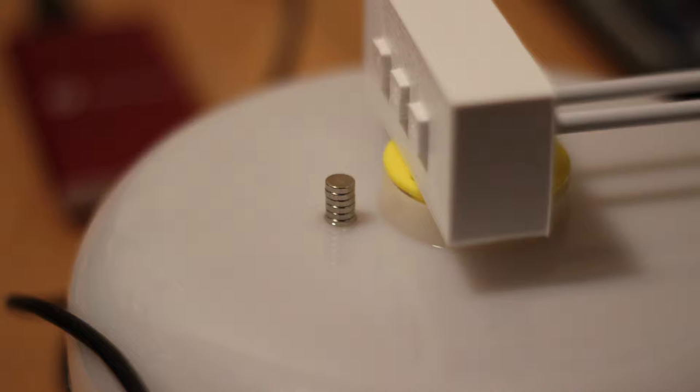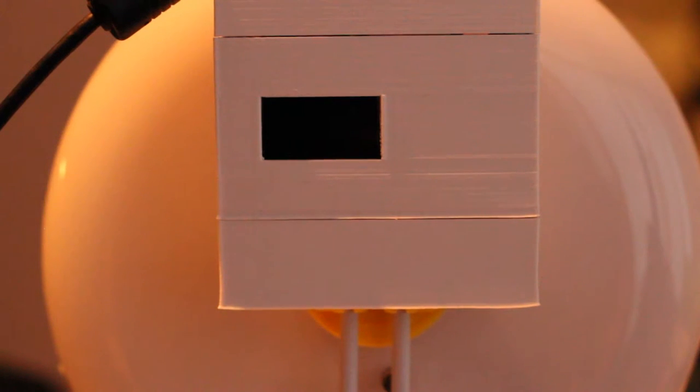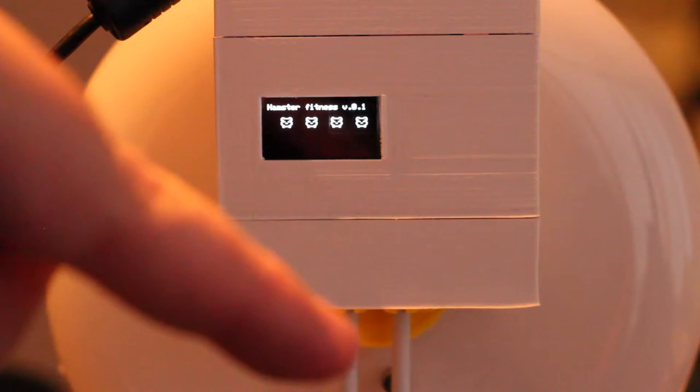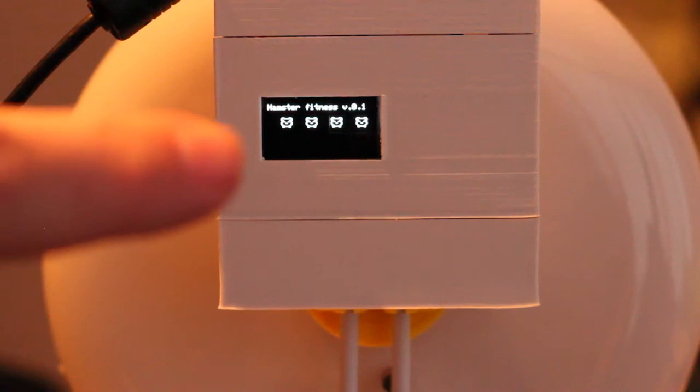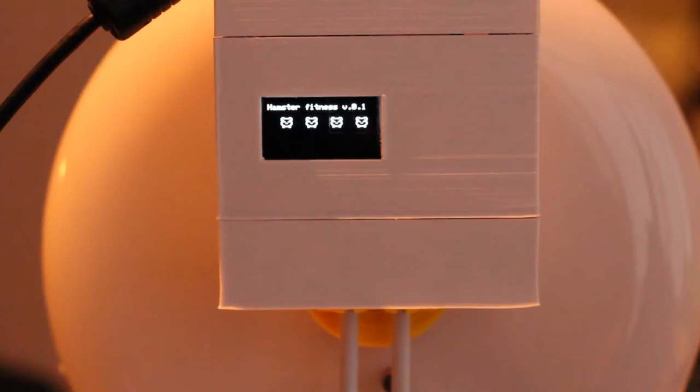So let's see this thing in action. So here's our hamster fitness device. We'll turn it on in a minute. And as you can see in the bottom there, you can see the little magnet. And right now it's calibrating. After it's done calibrating, it will turn off the display.